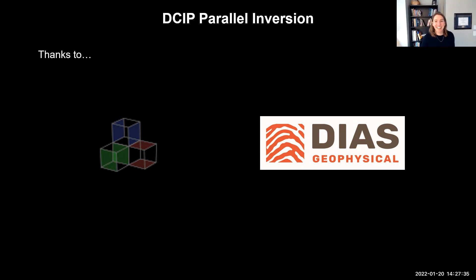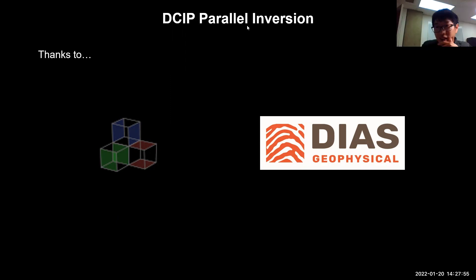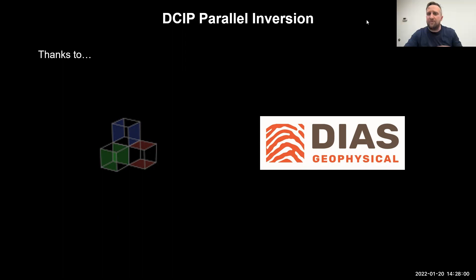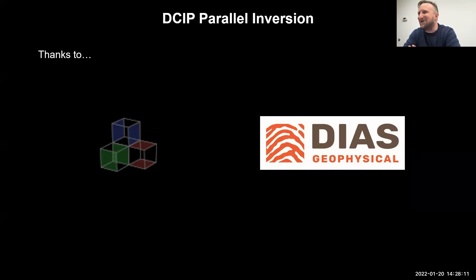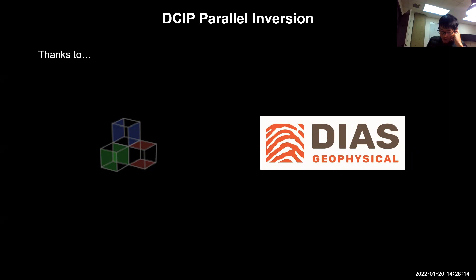Thank you, John. We'll open it up for questions. Soggy already has one in the chat. Feel free to raise your hand or drop questions in the chat. The first question: how many cores were used for that 38-hour inversion? That would be eight cores per node. And how many nodes? On that model, one of the nodes actually failed on me, so I only used three — 24 cores total.